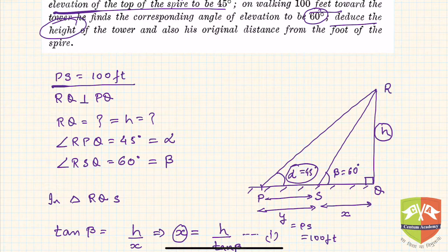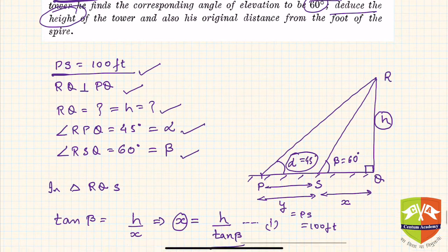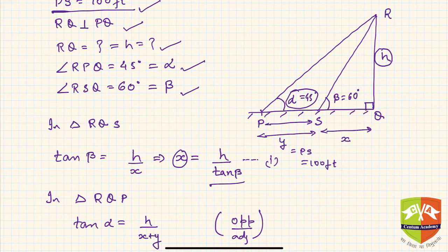If you see, I have mentioned PS is 100 feet, that's what has been given. Clearly, RQ is perpendicular to PQ. RQ is the height and you have to find that out. It's given that two angle of elevations: RPQ is 45 degrees and RSQ is 60 degrees. Now we will use our trigonometric ratios knowledge and write a few equations.